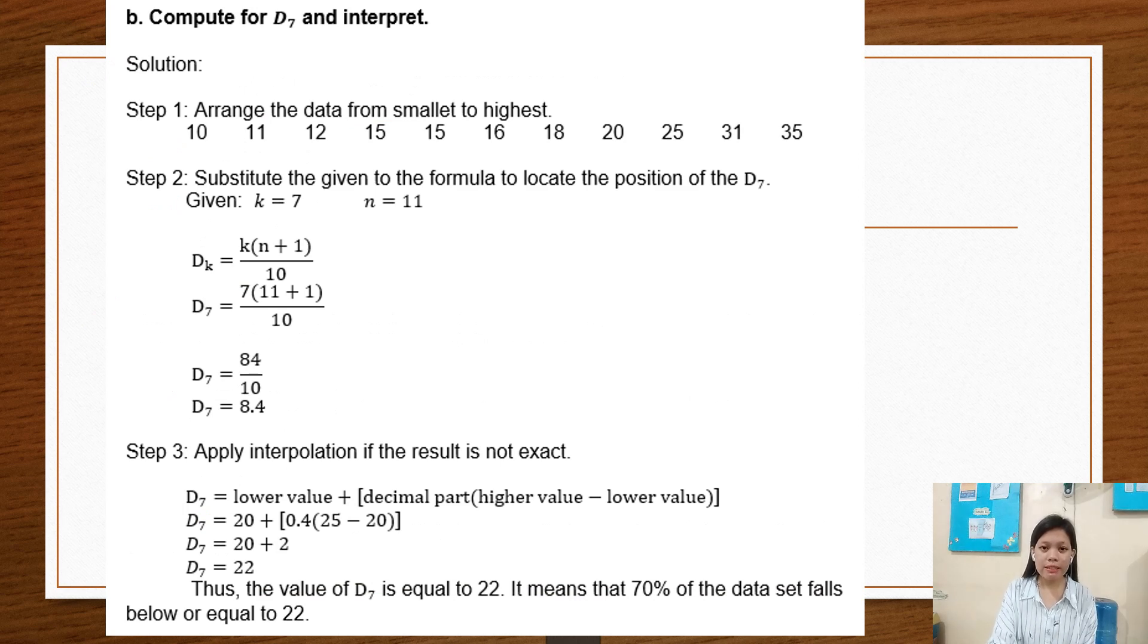Compute for D7 and interpret. Solution: Step 1, arrange the data from smallest to highest. Step 2, substitute the given to the formula to locate the position of D7. Given K equals 7 and N equals 11. D7 equals 7 times 11 plus 1 over 10, equals 84 over 10, equals 8.4.